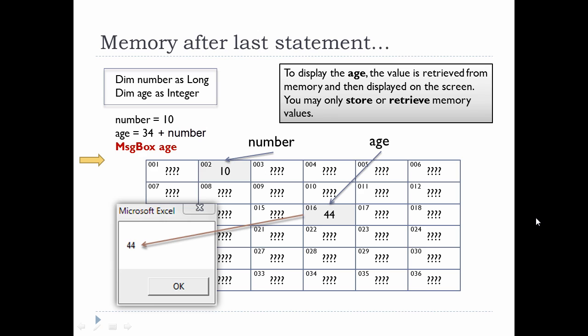To display age of course we have to do another retrieval and retrieve that value from the computer's memory and then we display it on the screen. A very simple idea is that you can only store or retrieve memory values. There's really nothing else you can do with memory values. You store something into it with assignment or you retrieve it.